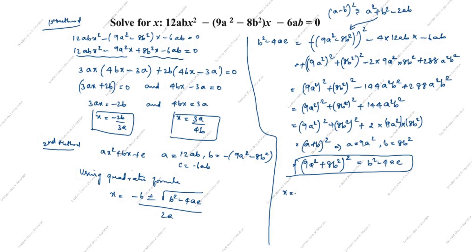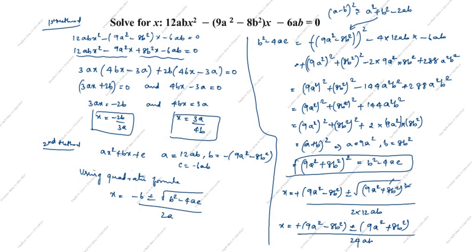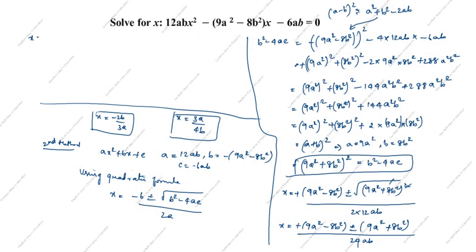Now substituting into the quadratic formula: x equals minus(minus(9a² minus 8b²)) plus or minus root of (9a² plus 8b²)², all divided by 2 times 12ab, which is 24ab. The square and root cancel, leaving x equals (9a² minus 8b²) plus or minus (9a² plus 8b²) divided by 24ab.